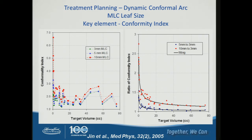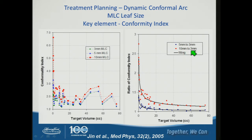Regarding MLC leaf size: nobody really uses 1 cm leaf size anymore, but many clinics still have 5 mm. We evaluated conformality index versus target volume for different leaf sizes (3, 5, and 10 mm). For very small lesions, conformality index increases significantly with 5 mm leaves. If the lesion is less than about 5 cc, you may not be able to treat on a regular LINAC with 5 mm leaf size, but high-definition leaves may work. This gives you guidance on what patients can be treated on your regular LINAC.